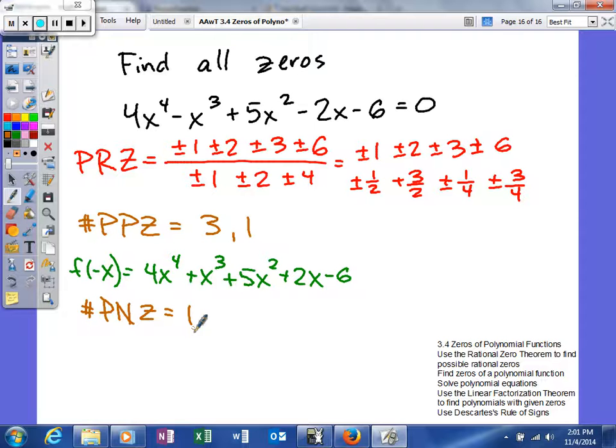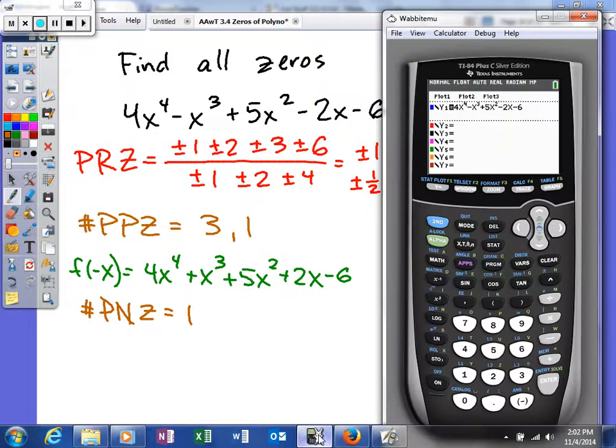So that could mean one of two things. Either all of our zeros are real, so we would have three positive and one negative. Or we have one positive and one negative, and the other two are imaginary. So what we're going to do now is we'll actually look at the graph and see, now that we've narrowed things down, which ones might work out.